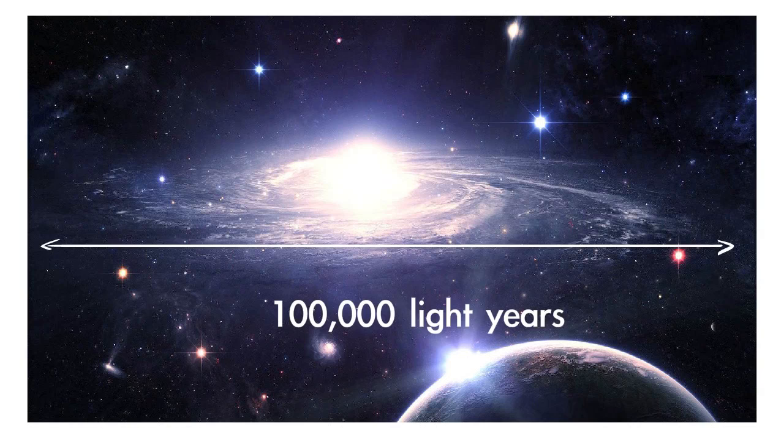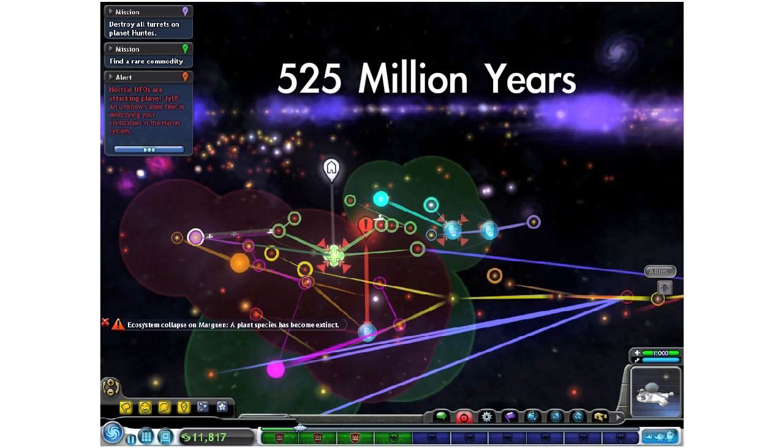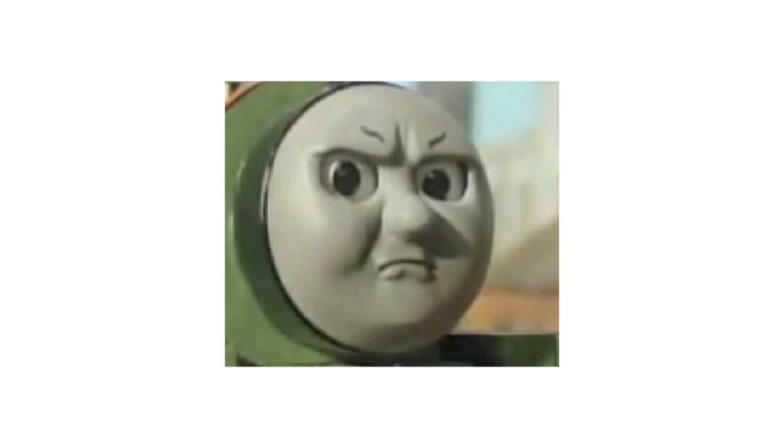As the galaxy is roughly 100,000 light years across, this means that the entire galaxy should be colonized within 525 million years. And this is the most pessimistic estimate I've ever seen.